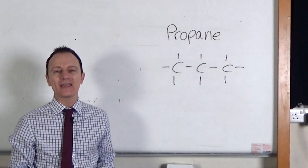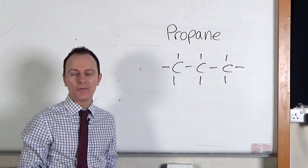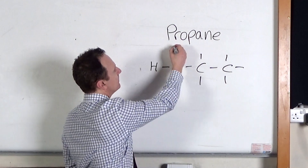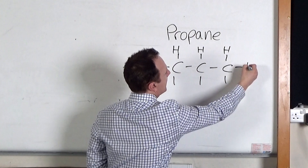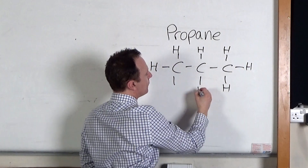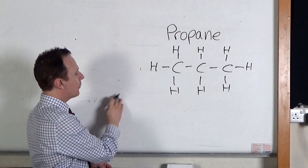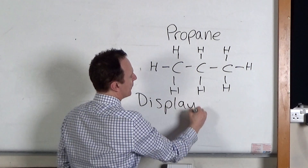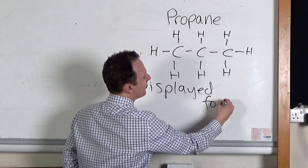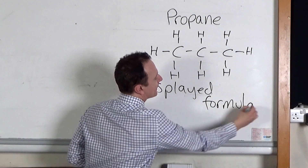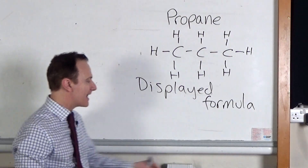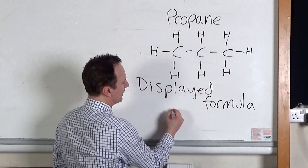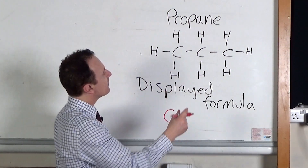I need to remember that alkane molecules are hydrocarbon molecules. I've drawn the carbon atoms, I now need to draw the hydrogen atoms. And we call this type of formula that shows the arrangement of atoms the displayed formula. Now we can also write a different type of formula where we add up the number of atoms in the molecule, and we call that a molecular formula. So for propane, it will be three carbon atoms, C3.